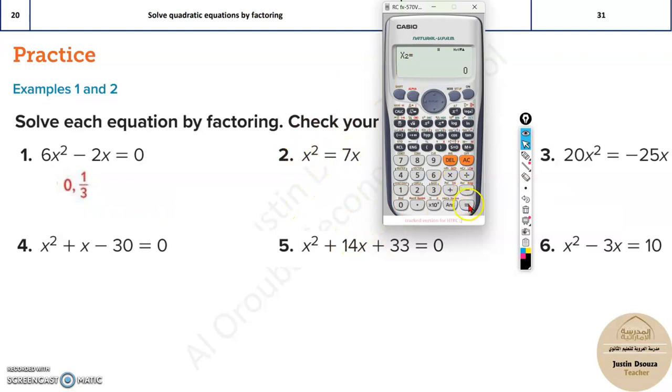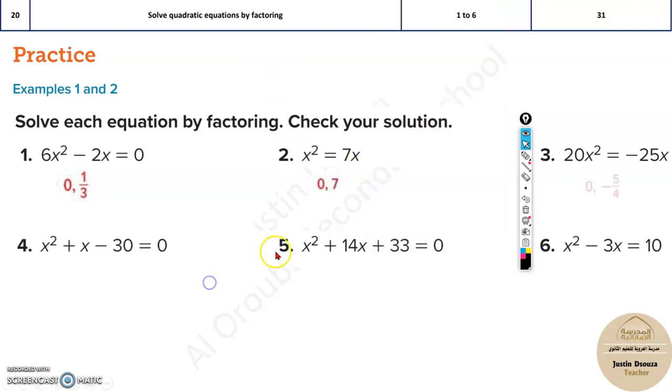Similarly, we can solve others. For this one, it's 1, and it will be minus 7 and then 0. So the answer is 7 and 0.